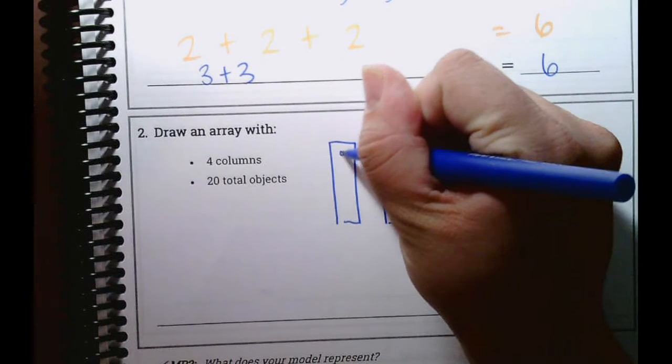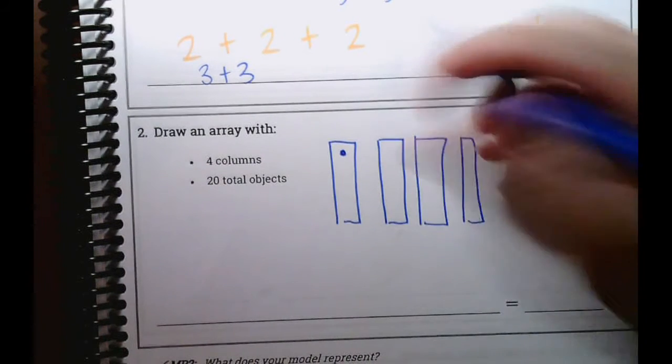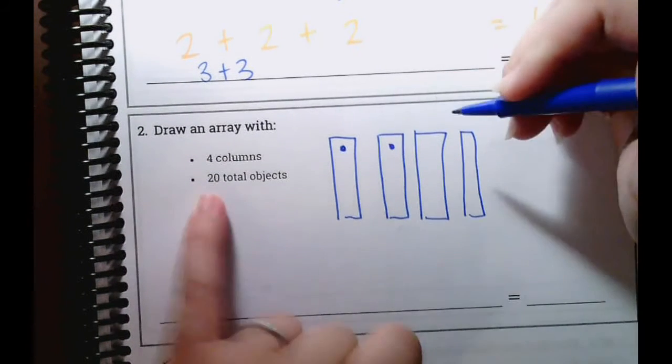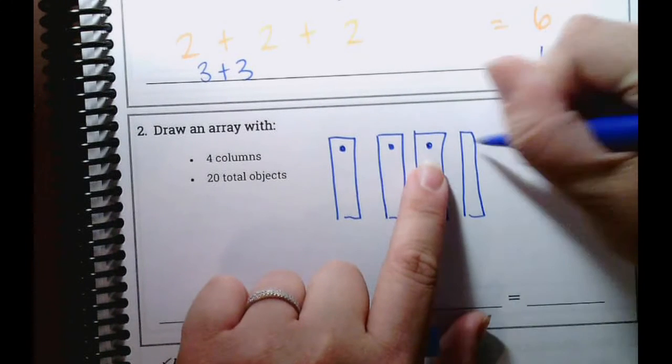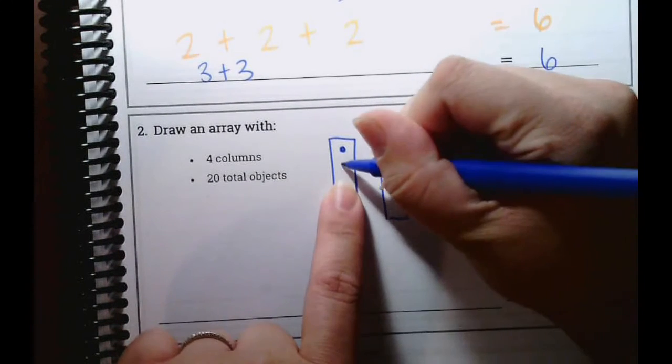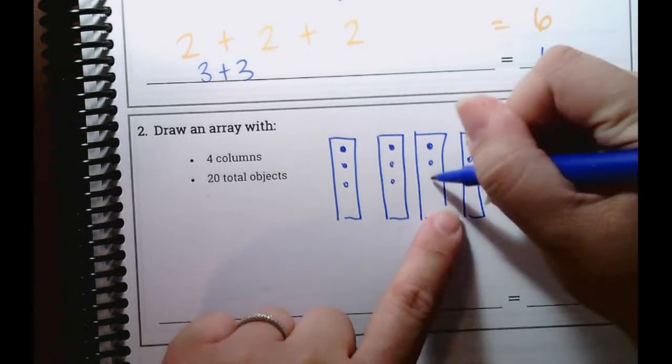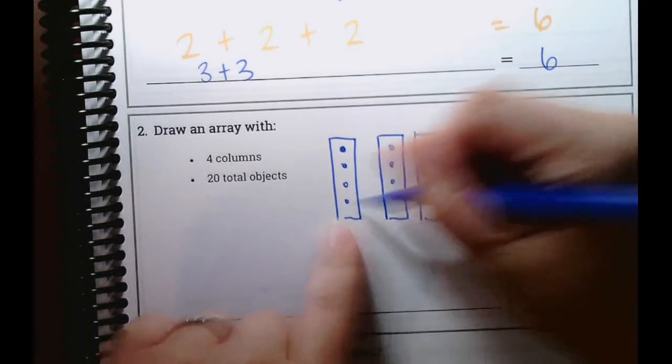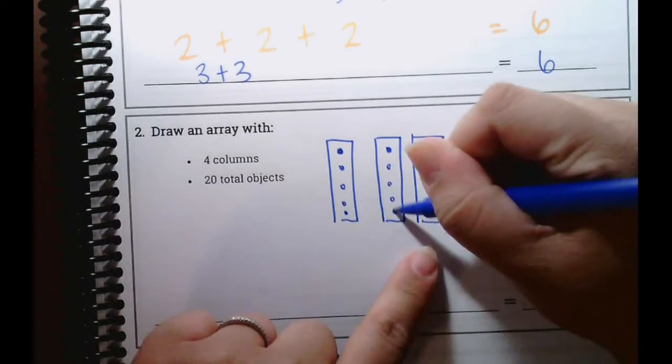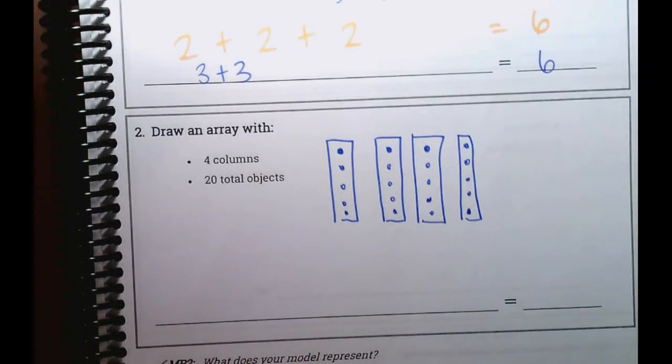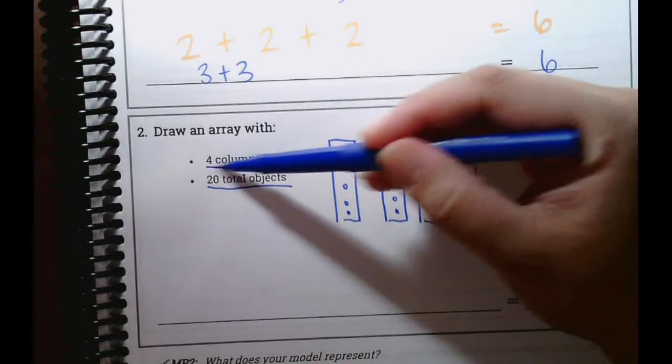We're going to take our 20 and start to put our objects inside of our columns. What I'm going to do is I'm going to put one in each column until they all run out. And I'm going to keep counting. One, two. We need to get to 20 total objects. One, two, three, four, five, six, seven, eight, nine, ten, eleven, twelve, thirteen, fourteen, fifteen, sixteen, seventeen, eighteen, nineteen, twenty. Okay.